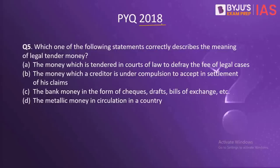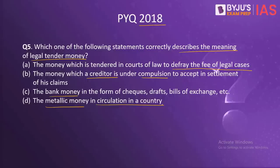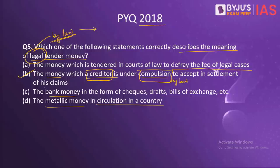Now a PYQ from the year 2018: which of the following statements correctly describes the meaning of legal tender money? The money which is tendered in courts of law to defray the fees of legal cases. The money which a creditor is under compulsion to accept in settlement of his claims. Bank money in the form of checks, drafts, bills of exchange, etc. The metallic money in circulation in a country. Legal tender is any official medium of payment legally recognized in a country that can be used for fulfilling any financial obligation, public or private. So the correct answer is B.